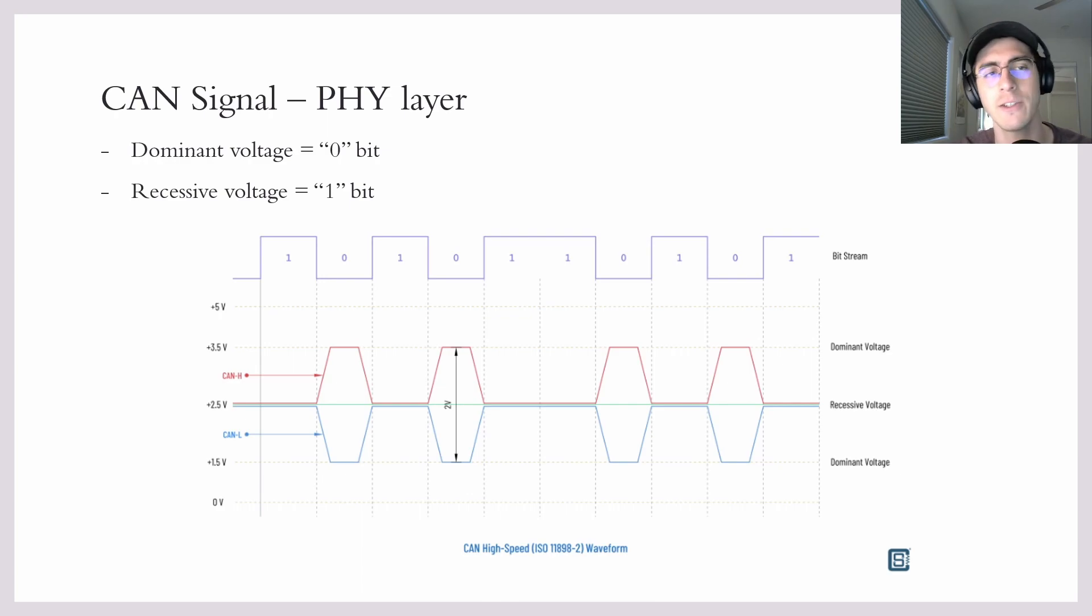So what does a CAN signal actually look like? The CAN protocol operates on the physical layer and the data link layer of the OSI model. So the PHY layer, the physical layer, is as low as it gets. It just concerns voltage levels.